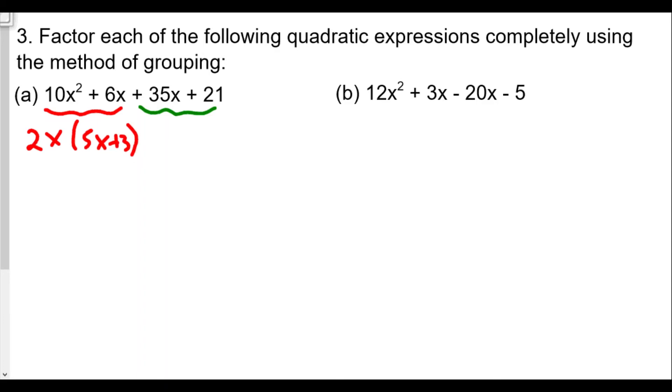Now for the second pair, 35x + 21, it looks like the GCF for that pair of numbers is going to be plus 7. If we factor out a 7, we get (5x + 3).